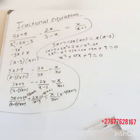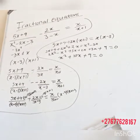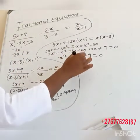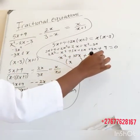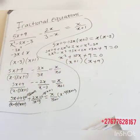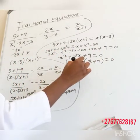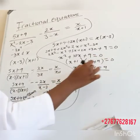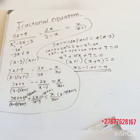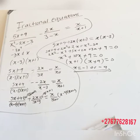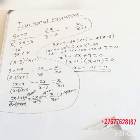Now we can factorize this one. We need two numbers that multiply to give 9 and add to give 10, so it's going to be (x plus 9)(x plus 1) equals 0. Therefore, x equals minus 1 or x equals minus 9. Hopefully you guys benefited from watching this video. Please don't forget to subscribe and share with your friends. Thanks.